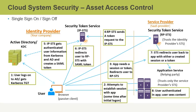In step six, the identity provider Security Token Service redirects the user back to the relying party Security Token Service with the SAML token. Remember, the relying party is where the application is hosted that the user is trying to access in the first place. In step seven, the Security Token Service redirects the user back to the app with either a created session or a token. Finally, in step eight, the user is authenticated in the application and can work with the content. The user will not see this happening — it occurs very quickly.